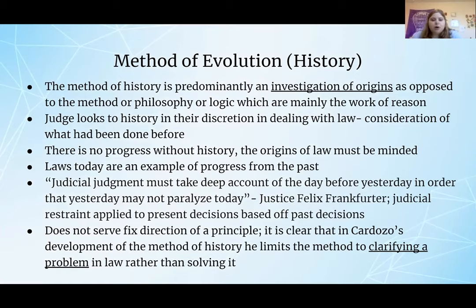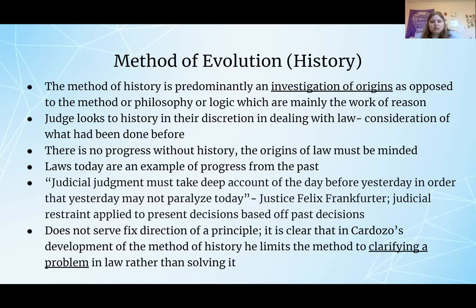The method of evolution, also called the method of history, is predominantly an investigation of origins, as opposed to the method of philosophy or logic, which are mainly the works of reason. The judge should look to history and use their discretion in dealing with law. Consideration of what had been done before is important in this method. There is no progress without history, so the origins of the law must be minded. Laws today are an example of progress from the past. Justice Felix Frankfurter stated that judicial judgment must take deep account of the day before yesterday, in order that yesterday may not paralyze today. Judicial restraint applied to present decisions is based on past decisions. This method does not serve to fix the direction of a principle; Cardozo's method of history limits itself to clarifying the problem, rather than addressing how to solve it.